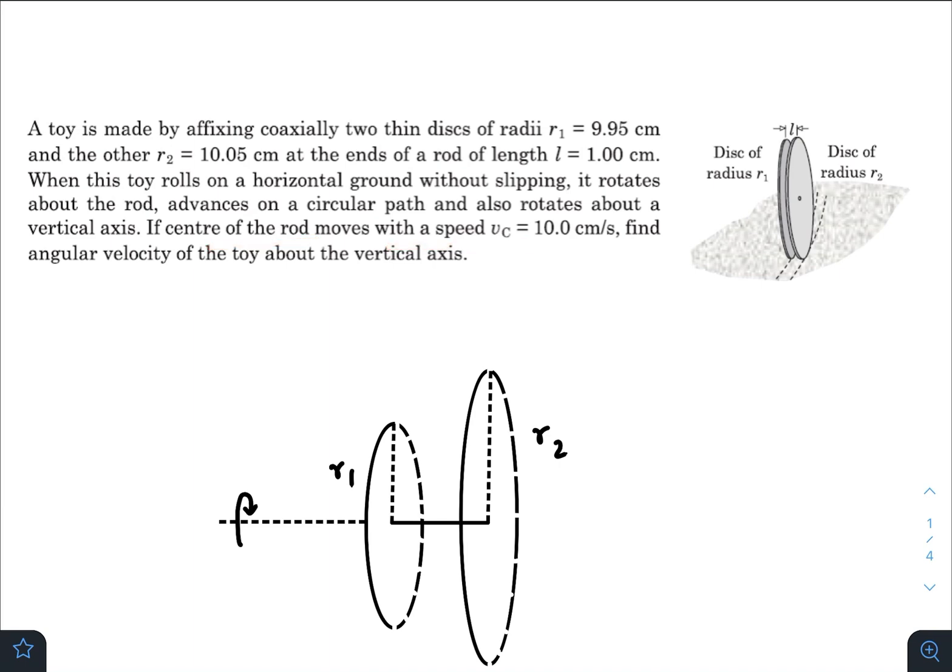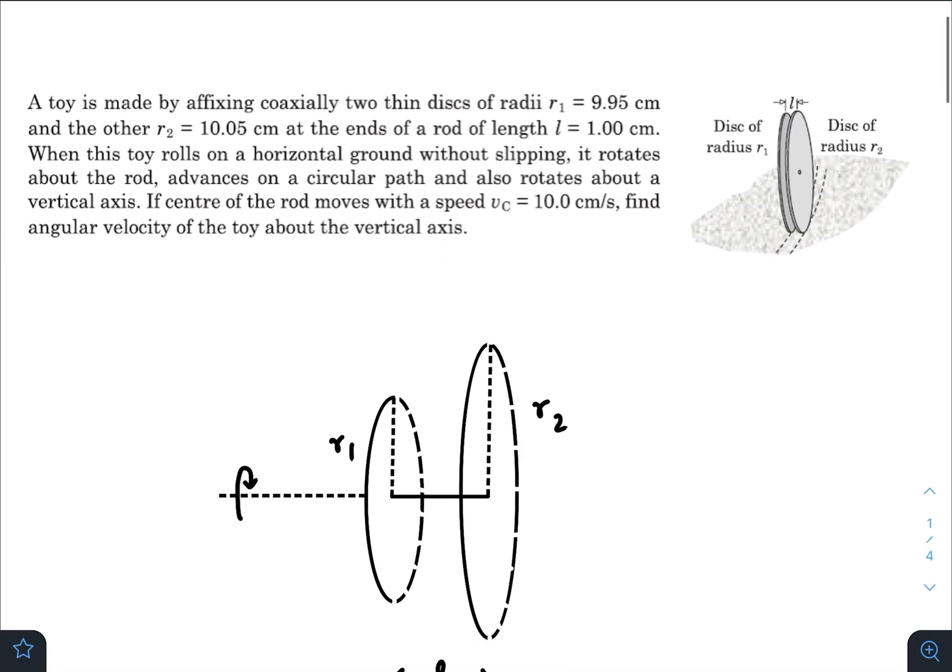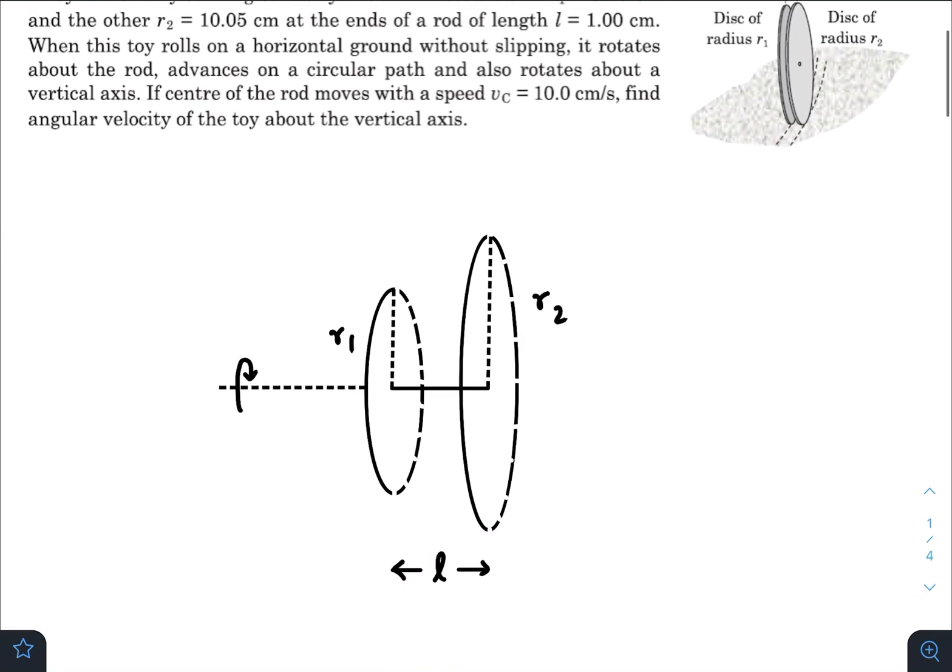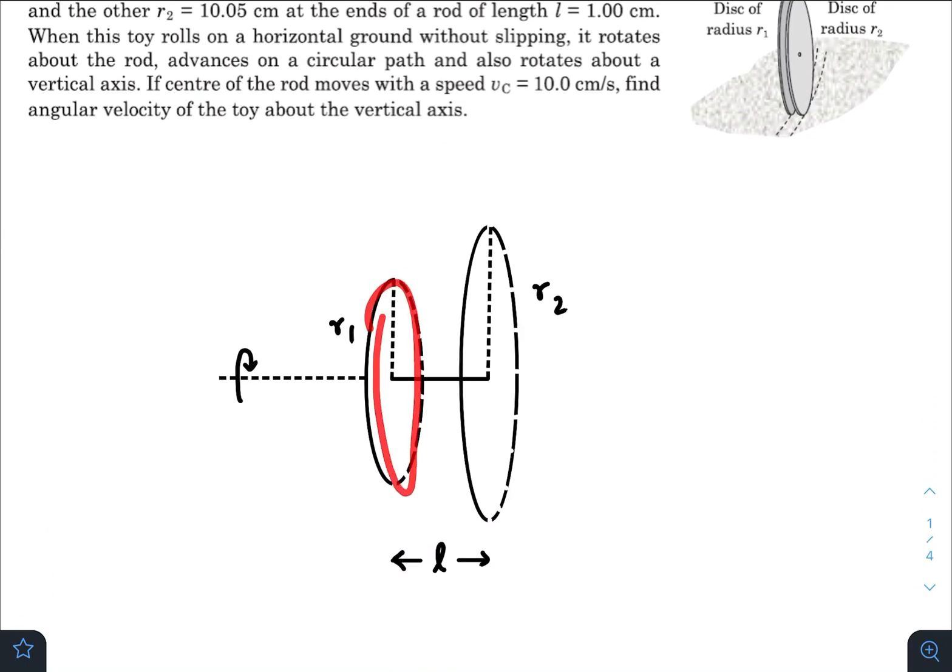If center of the rod moves with a speed vᴄ, find angular velocity of the toy about the vertical axis. Now if you analyze the diagram or the structure, there are two disks of radii r₁ and r₂, both are different, connected coaxially by a massless rod of length l.